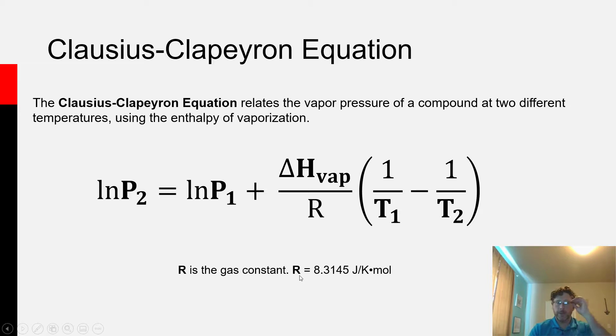Instead, we use that other value I showed you back in chapter eight. R is equal to 8.3145 joules per kelvin mole. So you've got to choose the right value of R to use with this equation.